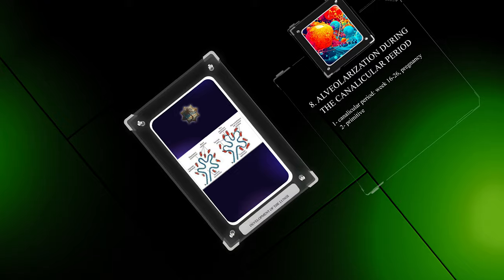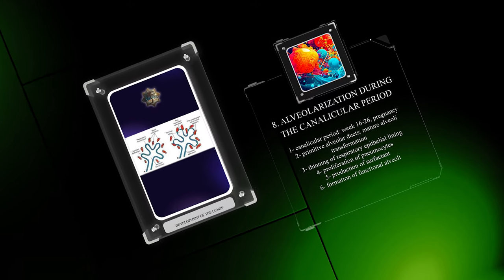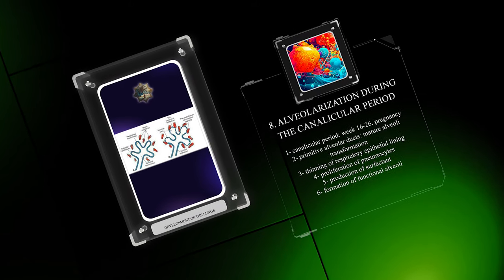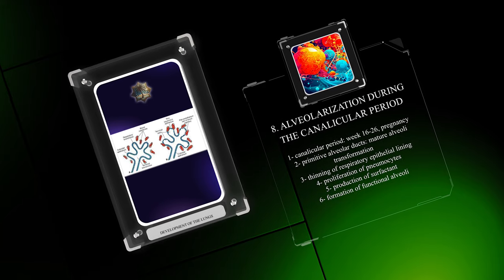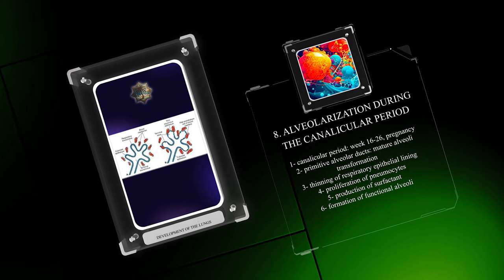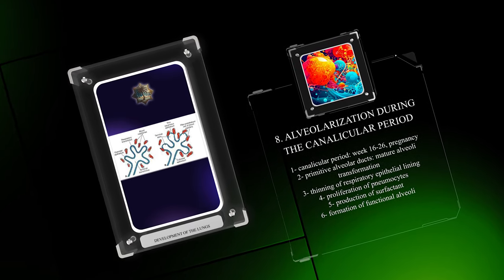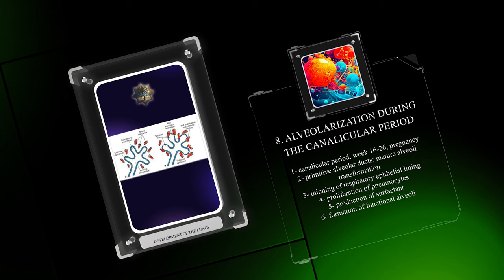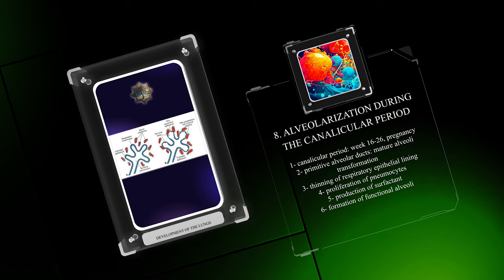During the canalicular period, from week 16 to 26 of pregnancy, the primitive alveolar ducts transform into mature alveoli. This involves the thinning of the respiratory epithelial lining, proliferation of pneumocytes, and production of surfactant, resulting in the formation of millions of functional alveoli.